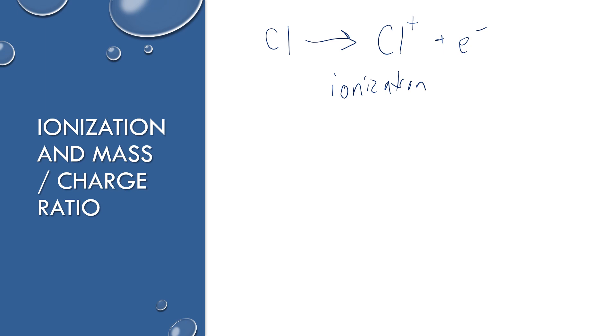You can also do it for other elements like carbon. You're just removing an electron and this is to process it so that it has a positive charge to work in the machine.